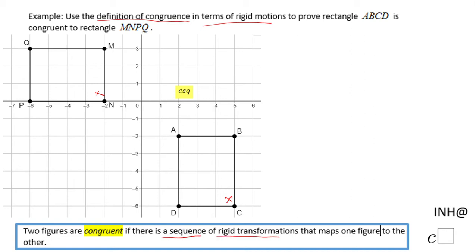The first thing to look at is the corresponding sides AB and MN. If you notice, AB is a horizontal segment and MN is a vertical segment. That tells us we should have a rotation — it can also be a reflection, but a rotation is another way to look at it.